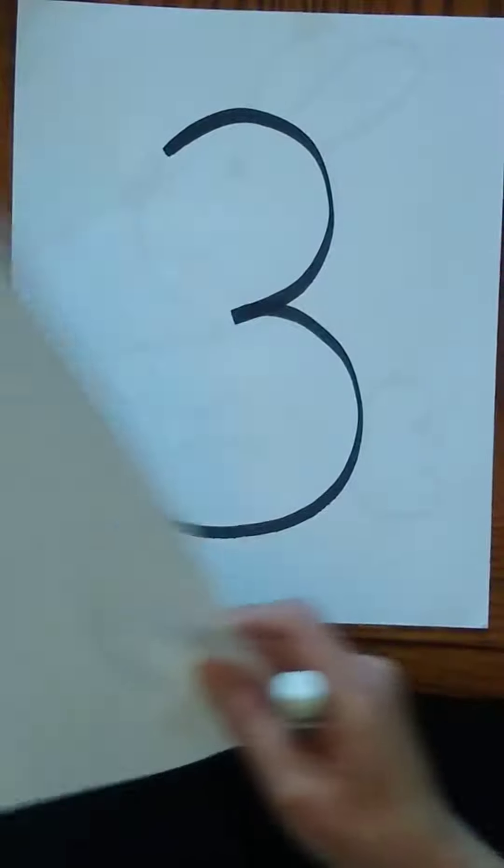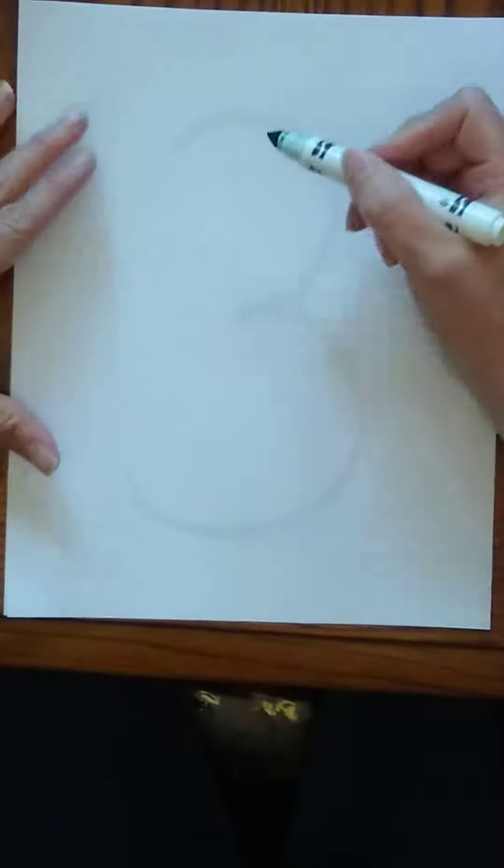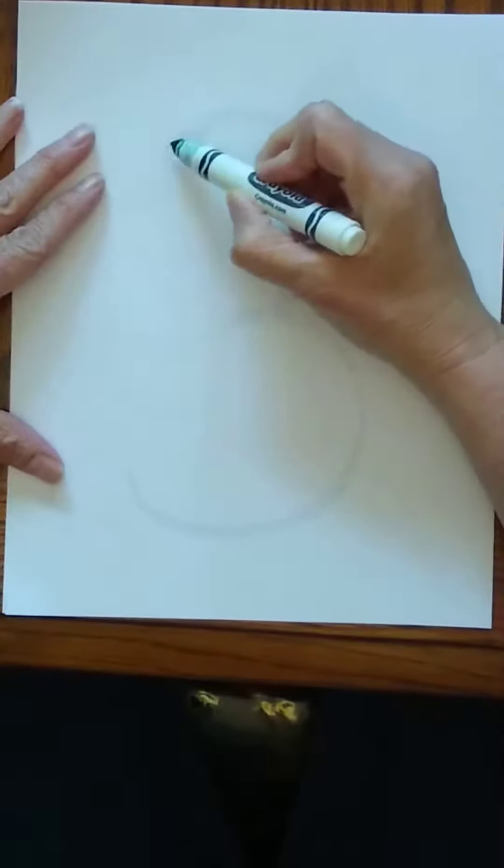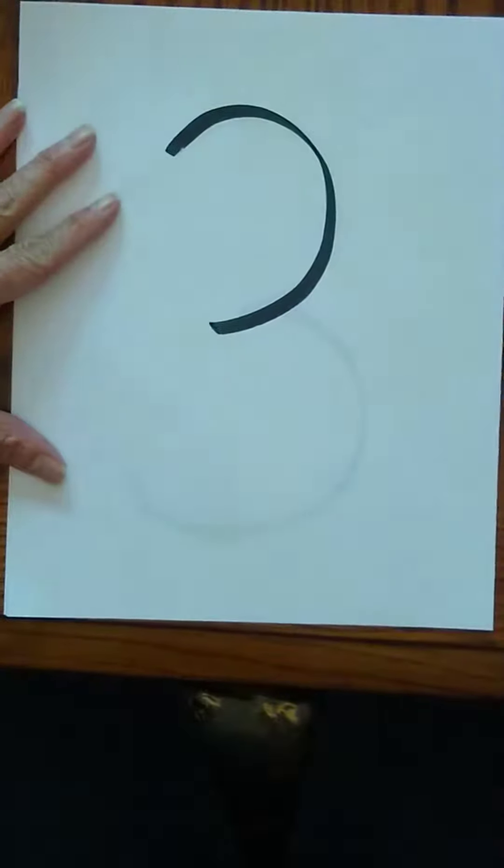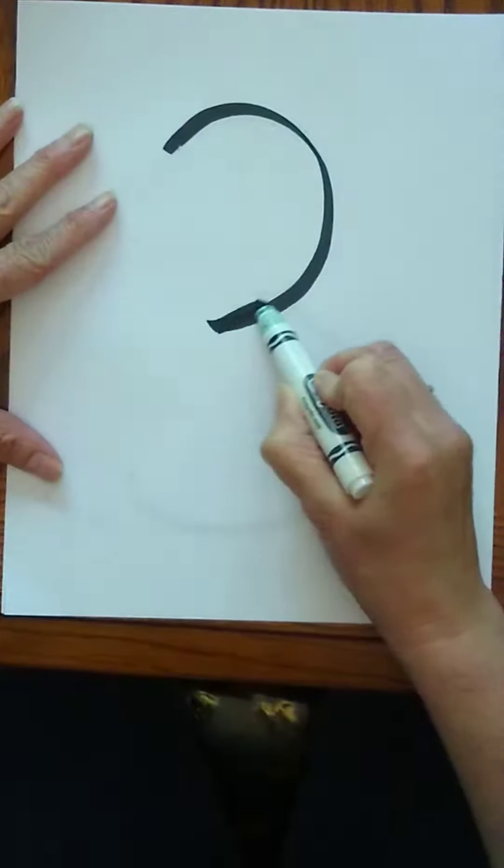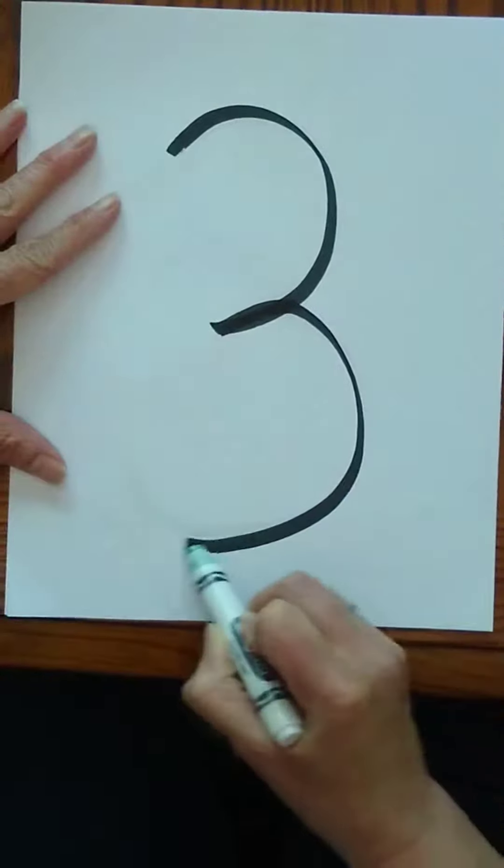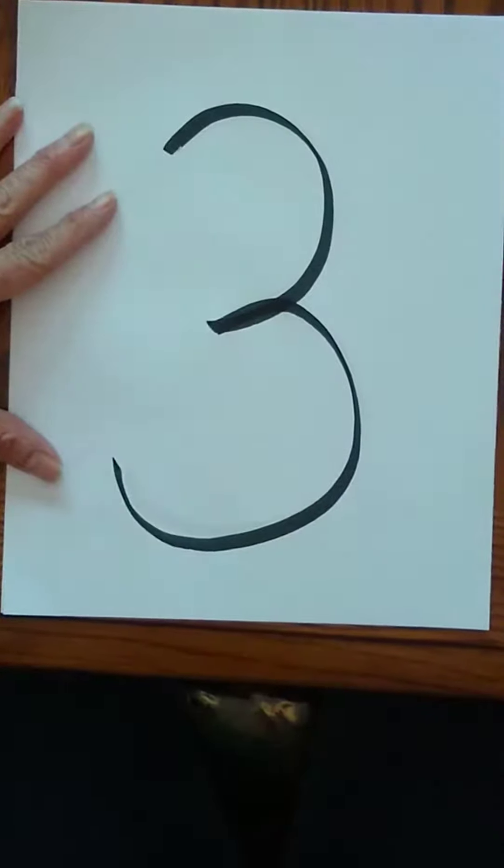Start with the number three. The number three starts like two parts, two circles that are incomplete. The first one starts up high. Don't go all the way around. The second one is underneath. Again, don't go all the way around.